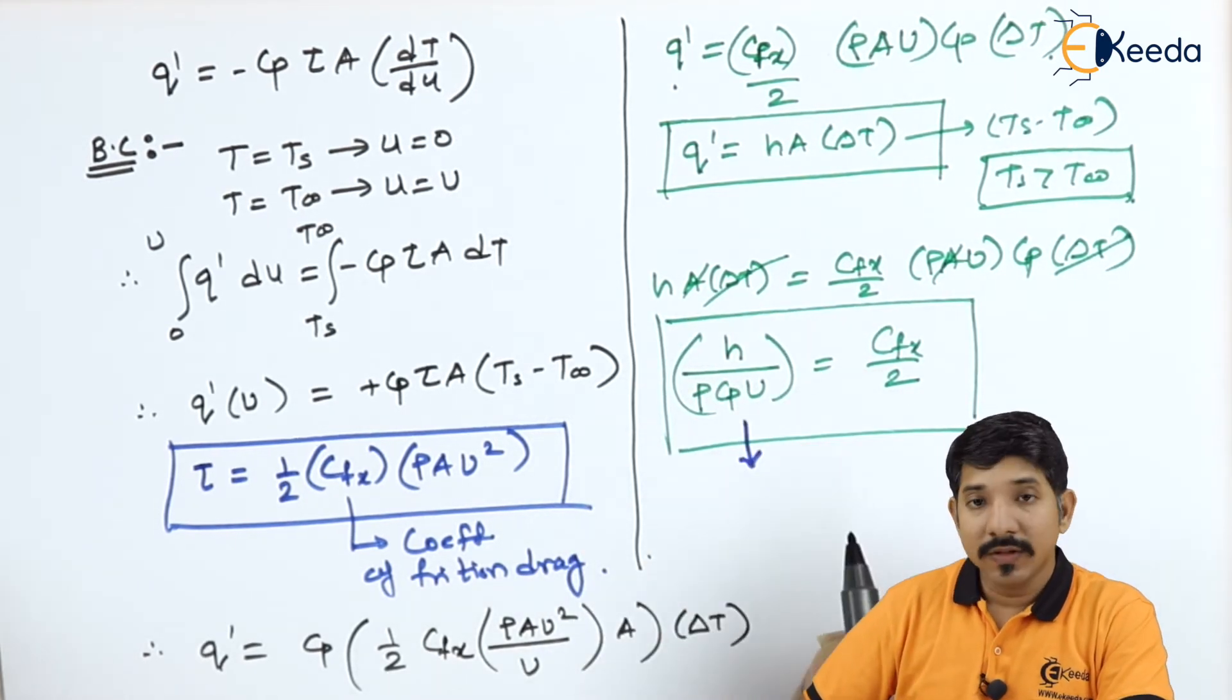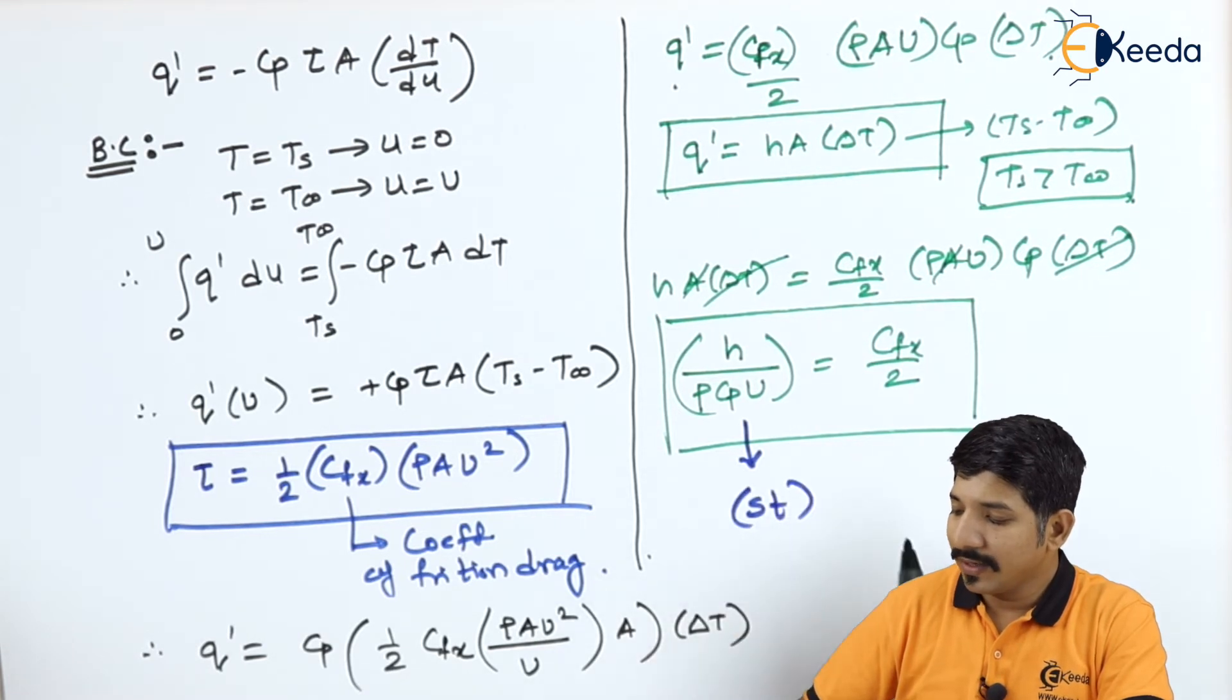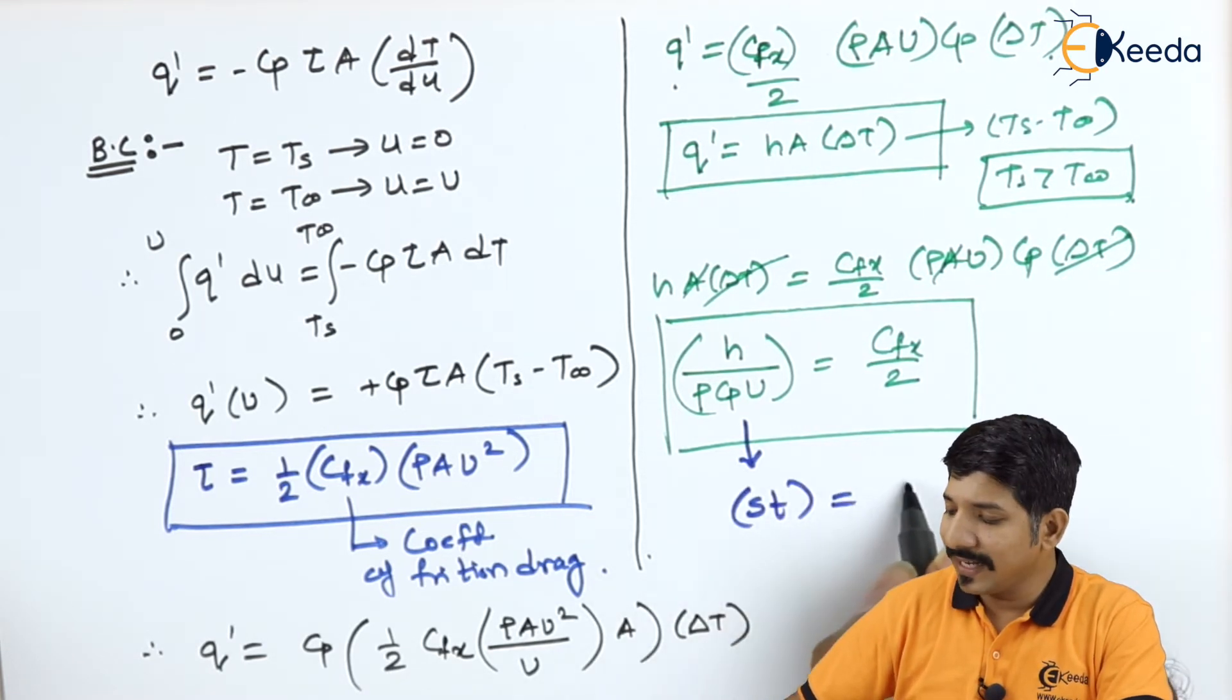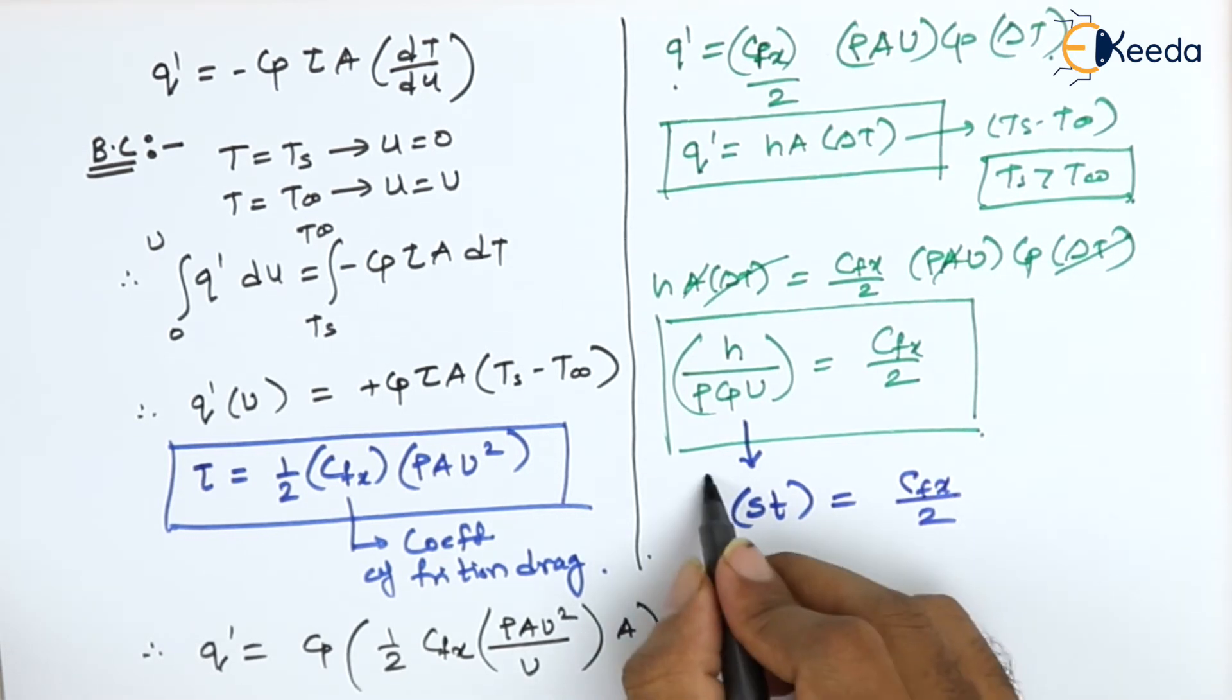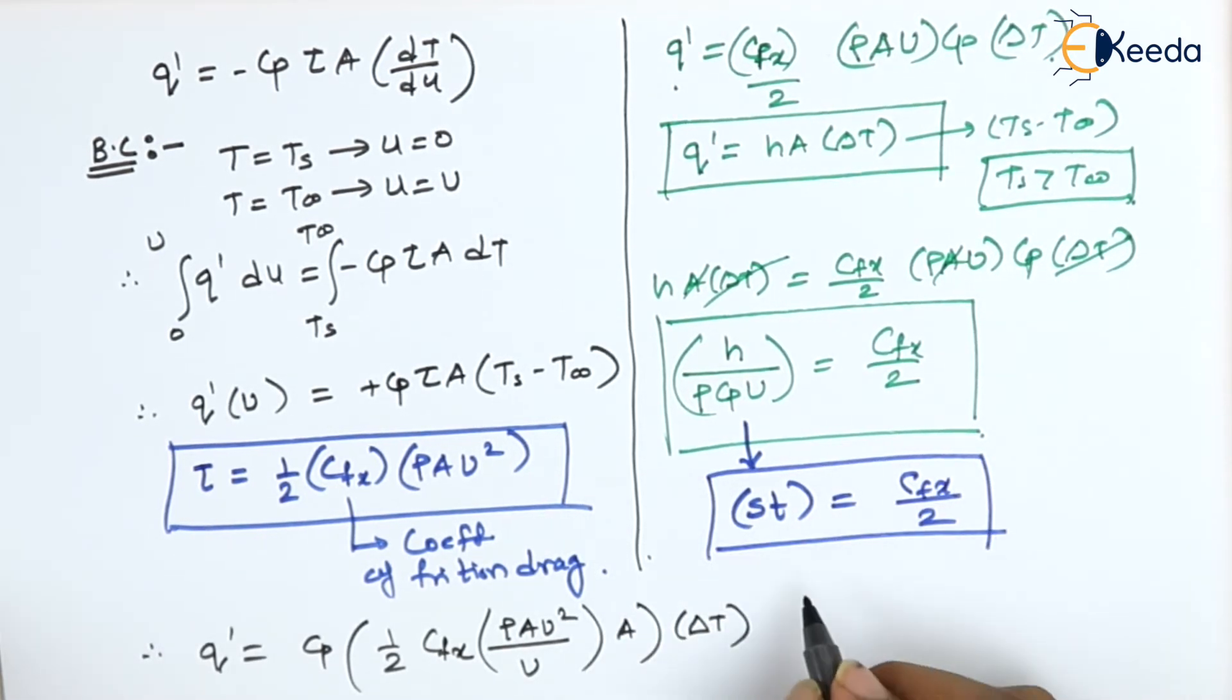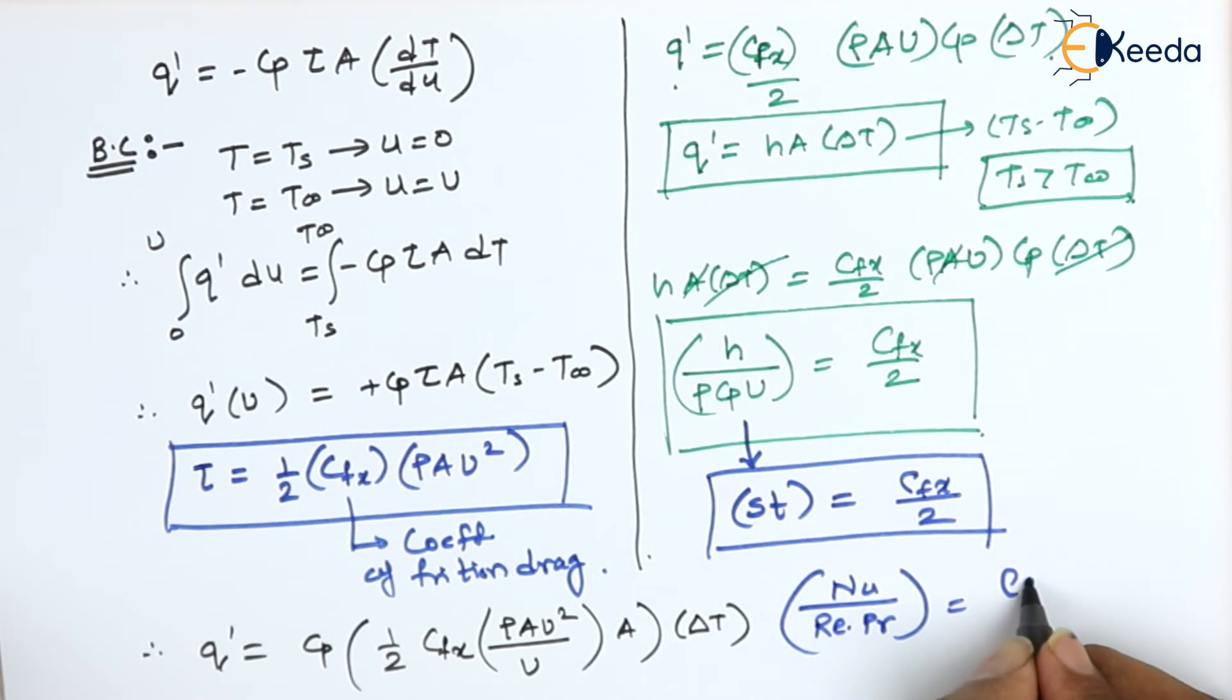Now what is this term? This term is nothing but the Stanton number. So I can write down that Stanton number is given as Cfx upon 2. The Stanton number is also given as Nusselt number upon Reynolds into Prandtl number as Cfx divided by 2.